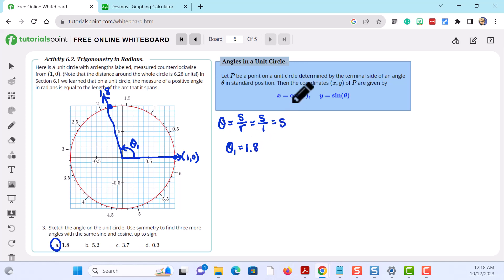Now in a unit circle we have x is equal to cosine of theta and y is equal to sine of theta. So if we want three more angles with the same sine and cosine up to sine, we need to select other points on the unit circle with the same x and y coordinates.